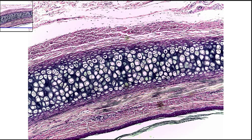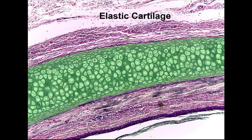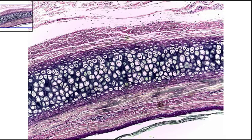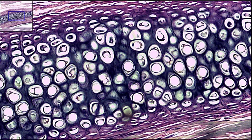This slide is your elastic cartilage. The current magnification is 100x total magnification. What we're looking for are the cells and the features that help distinguish this as elastic cartilage. It's this area right here that is your elastic cartilage. As we zoom in, you can see a little better detail of the actual elastic cartilage. The entire window here is now filled with elastic cartilage.